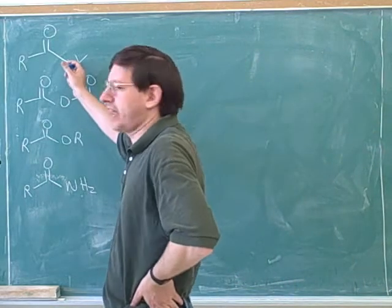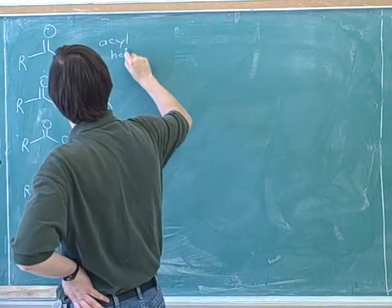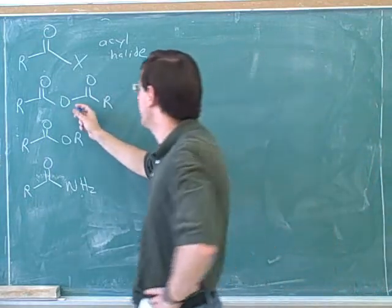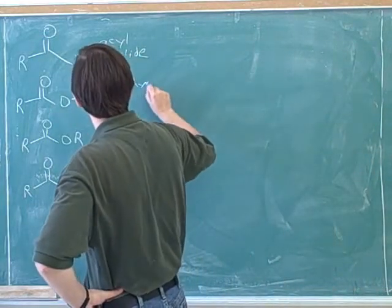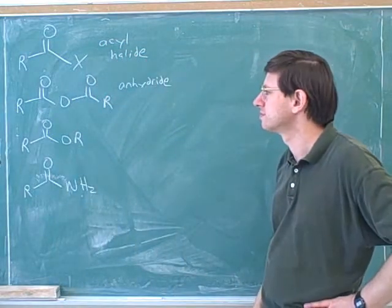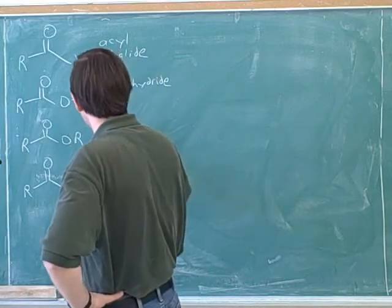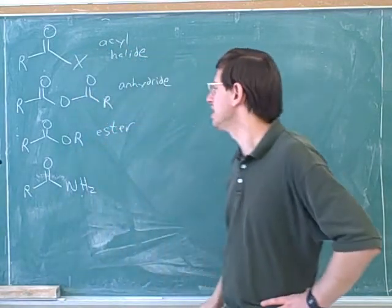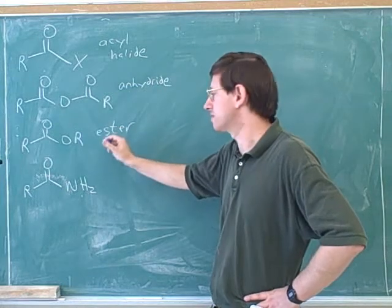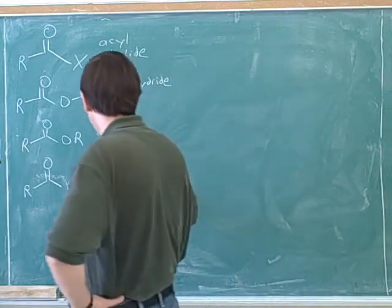We're using X to stand for halogen here, like we usually do. This is an acyl halide. This is an anhydride. This is an ester, not an ether. Ethers are something different. Oftentimes people confuse esters and ethers. This is an ester, not an ether. And this is an amide. I think that can also be pronounced an amate.